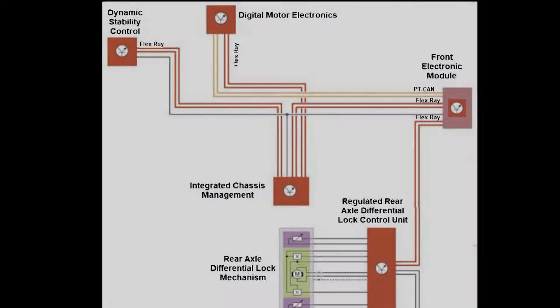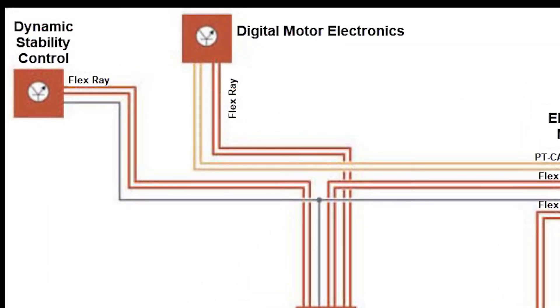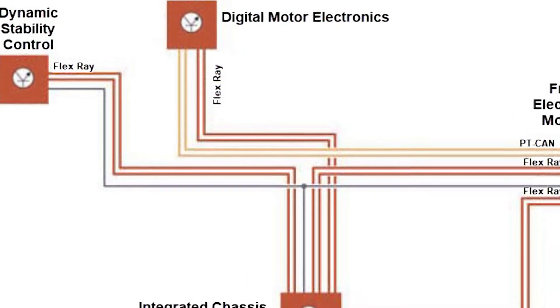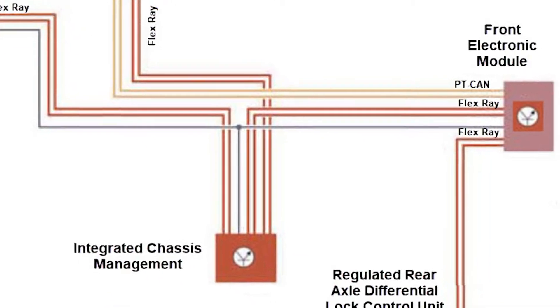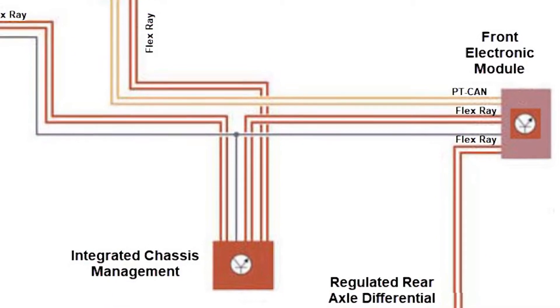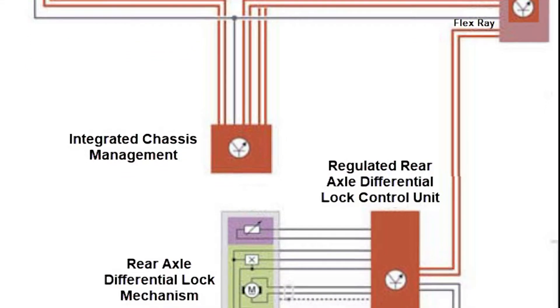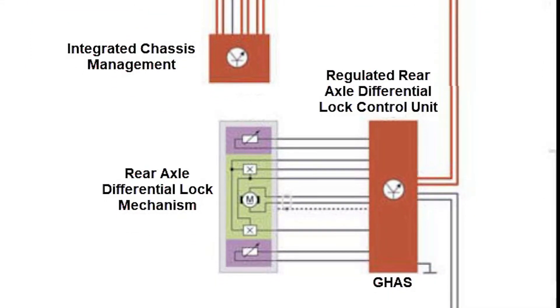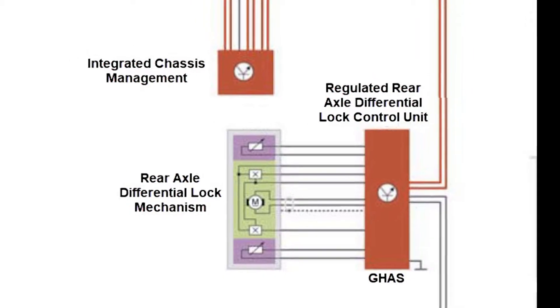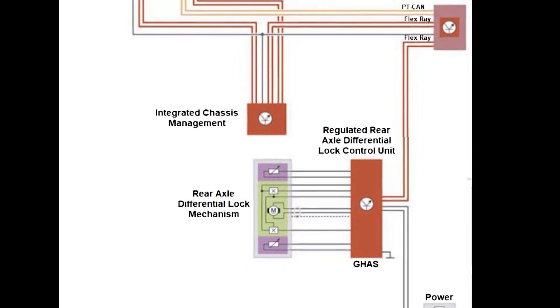Electronic and Computerized Control Operation: The Dynamic Stability Control Module, Digital Motor Electronics, Integrated Chassis Management, and Front Electronic Module all communicate over the FlexRay bus to the Regulated Rear Axle Differential Lock control unit, which controls the rear axle differential lock mechanism.